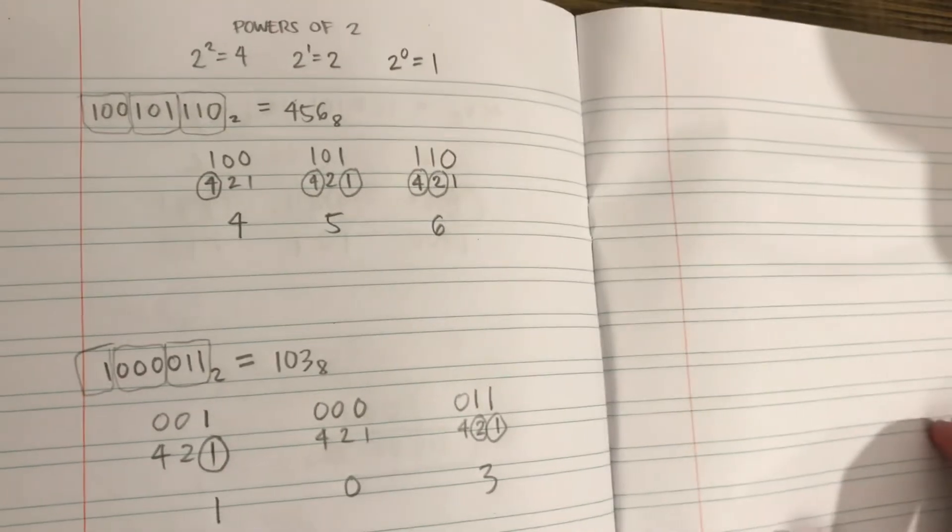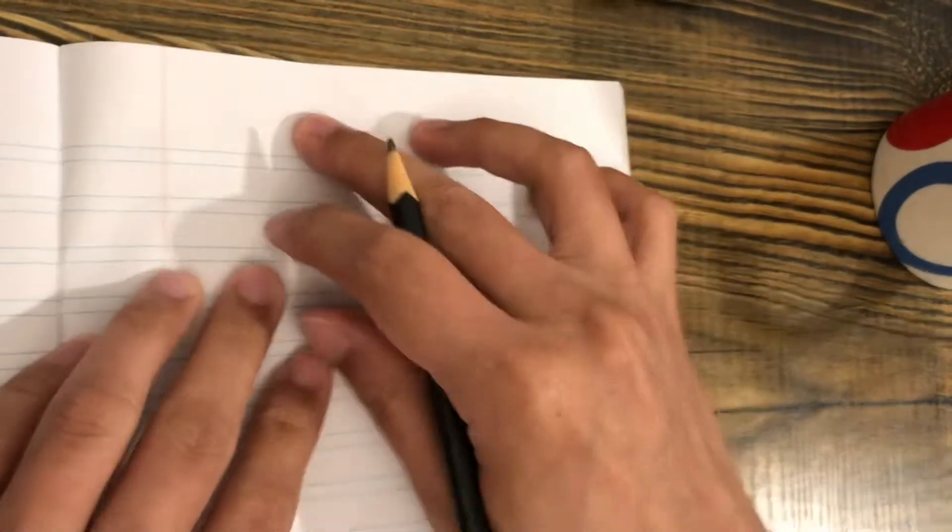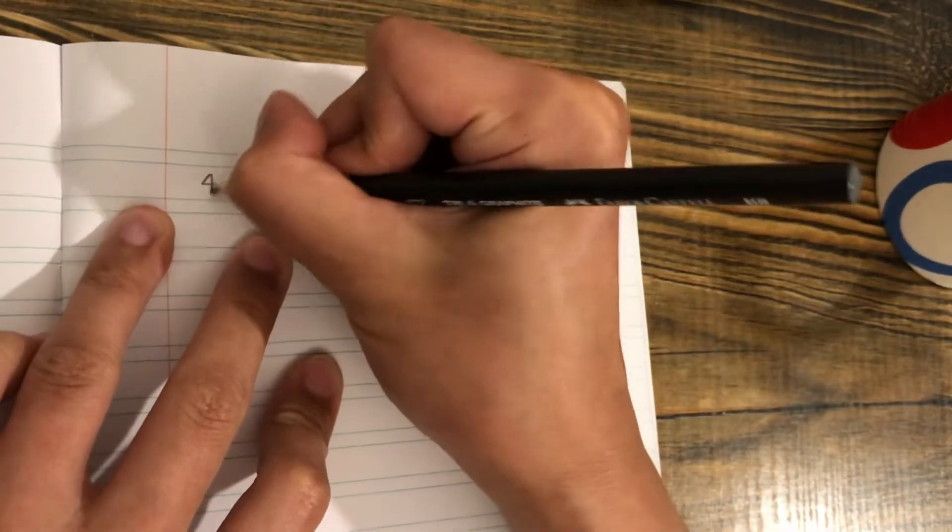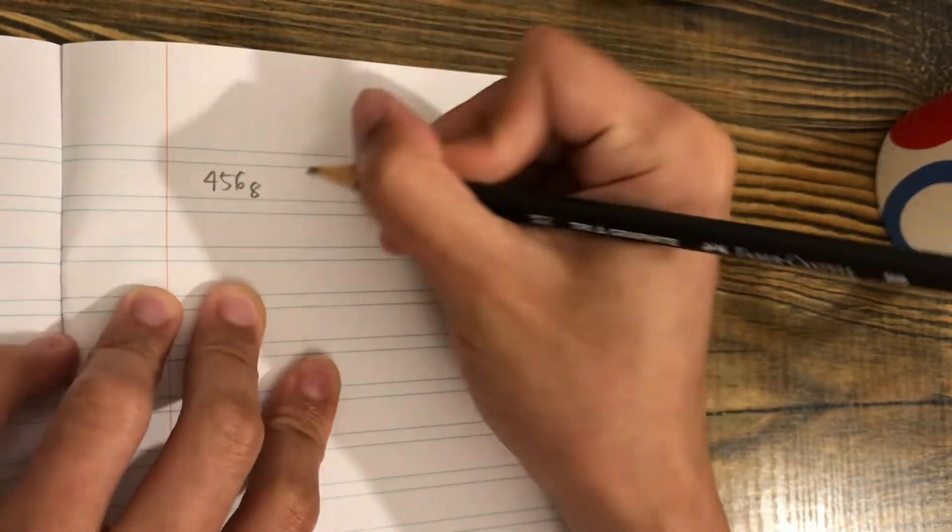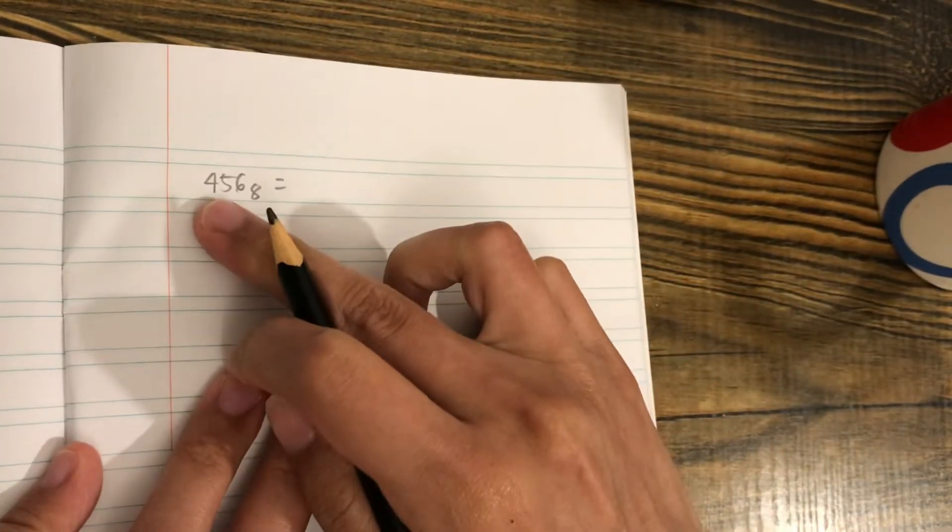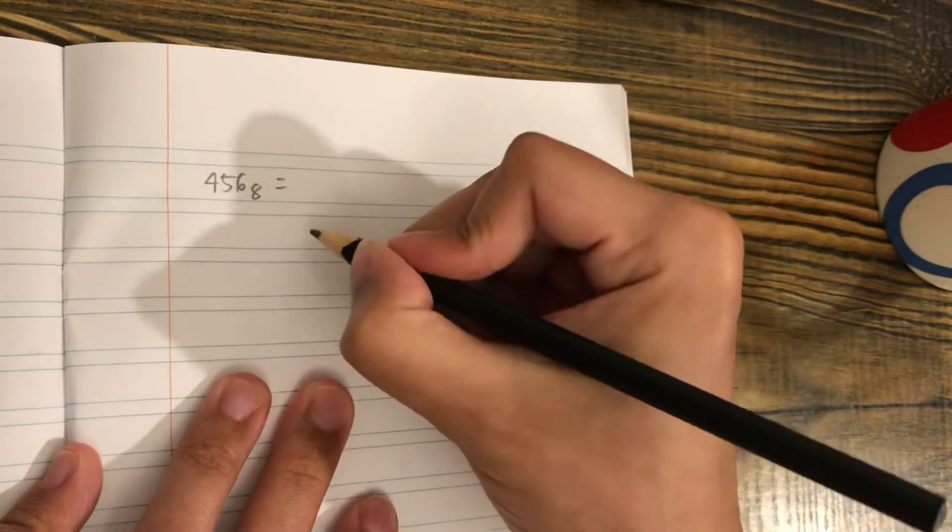Now, how do we convert octal to binary? Let's use the same example: 456. How do we convert it to binary? First, we separate the three digits.